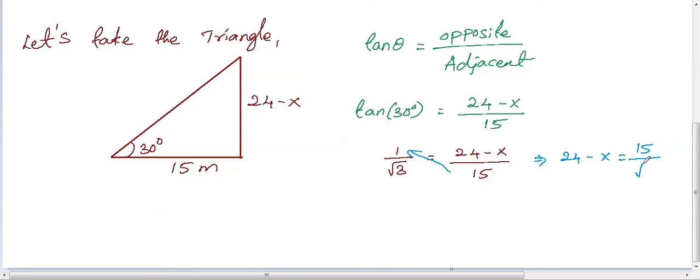So, we know that root 3 value is 1.732. So, if we divide 15 by 1.732, we will get 8.66.